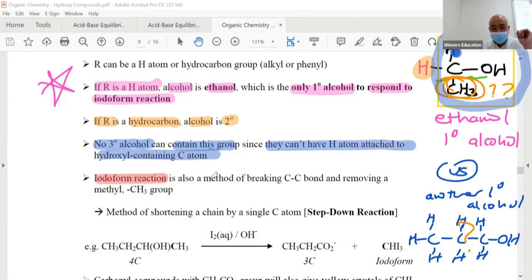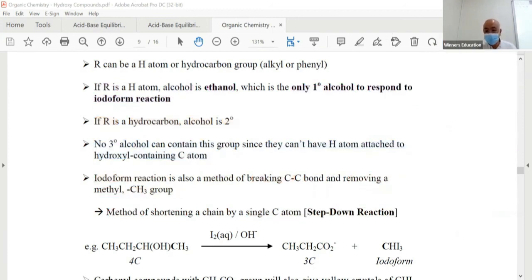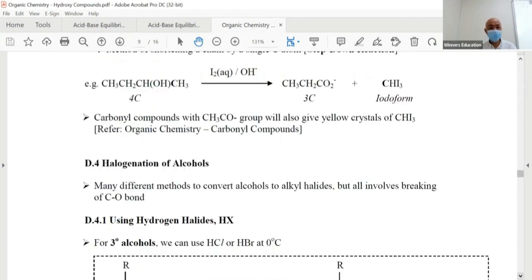Now, if you look at this reaction called iodoform reaction, it's actually a method of breaking a C-C bond. We break here. Remember? You break away the CH3, right? And basically, you remove the CH3 group. It's as good as it's a method of shortening a chain by single carbon. It's a step-down reaction. Remember, in the previous organic chemistry topic, we talked about step-up reactions. And I told you we'll also be able to step-down. I tell you, you have one step-up, two step-down reactions. This is the first step-down reaction. It's in this topic called hydroxy compounds of alcohols. So take a look. This alcohol with four carbon, after you apply your triiodomethane test, the carboxylic ion has only three carbon. We step it down by one.